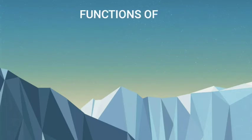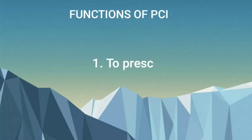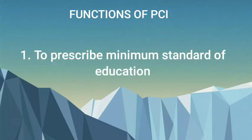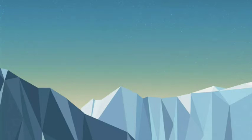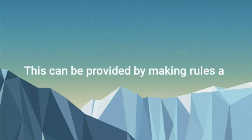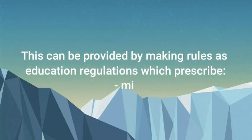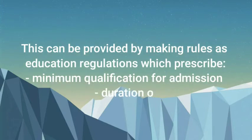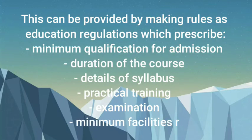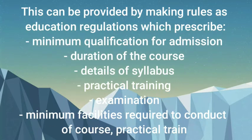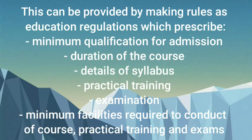Functions of PCI — (1) To prescribe minimum standards of education required for qualification as a pharmacist or to work in the pharmacy profession. This can be provided by making rules as education regulations which prescribe minimum qualification for admission, duration of the course, details of syllabus, practical training, examination, and minimum facilities required for conduct of the course, practical training, and exams.